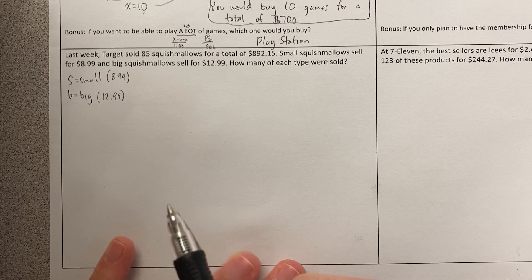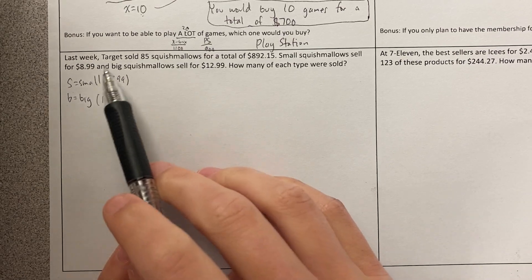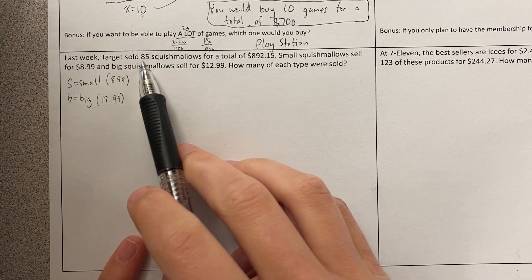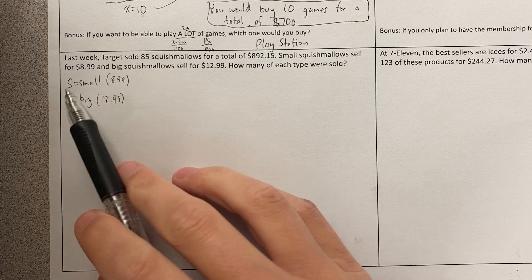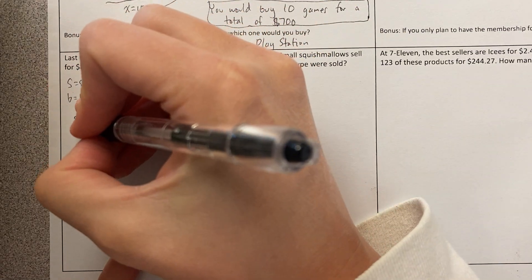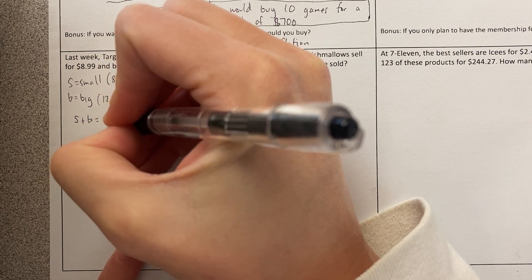Okay, let's write our equations. Here's what we know. First thing we know is that Target sold 85 Squishmallows. So the number of small Squishmallows plus the number of big Squishmallows is 85.